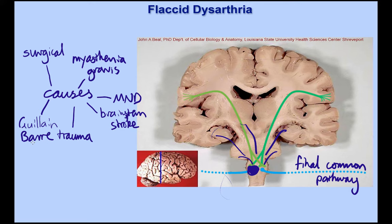How flaccid dysarthria sounds depends on the extent of the damage. You might have damage to an entire cranial nerve on one side, or it might just be an individual muscle group, so it doesn't have a uniformly characteristic presentation. Most of the time when speech pathologists talk about flaccid dysarthria, they're talking about a more general presentation — particularly conditions causing flaccidity across the speech subsystems and progressive diseases like myasthenia gravis and motor neuron disease. Remember, dysarthria means damage to the neurological system — if you have damage to muscles directly from surgery, that's technically not dysarthria.